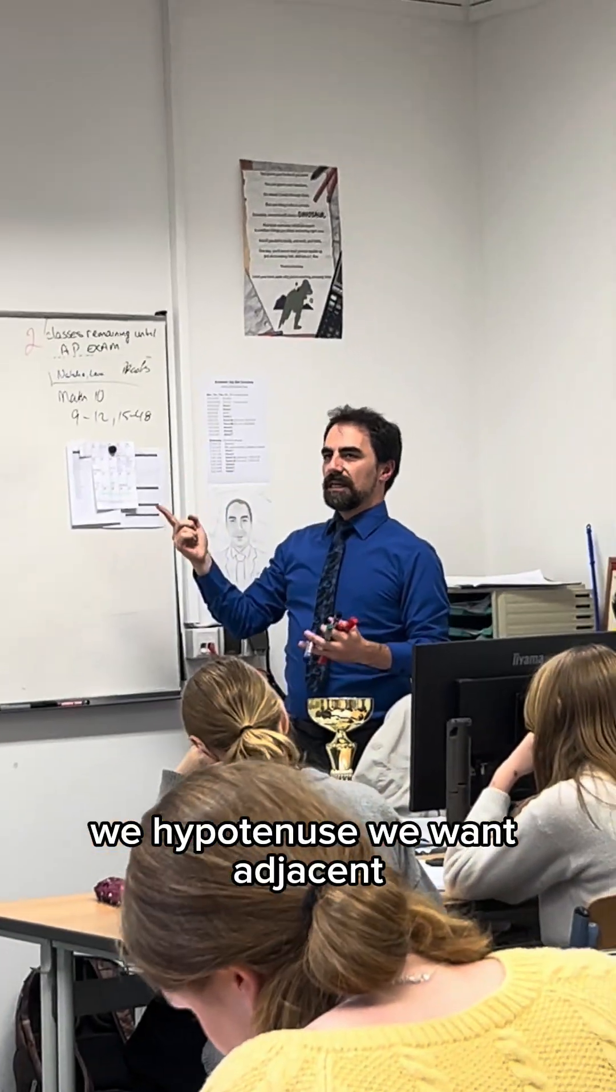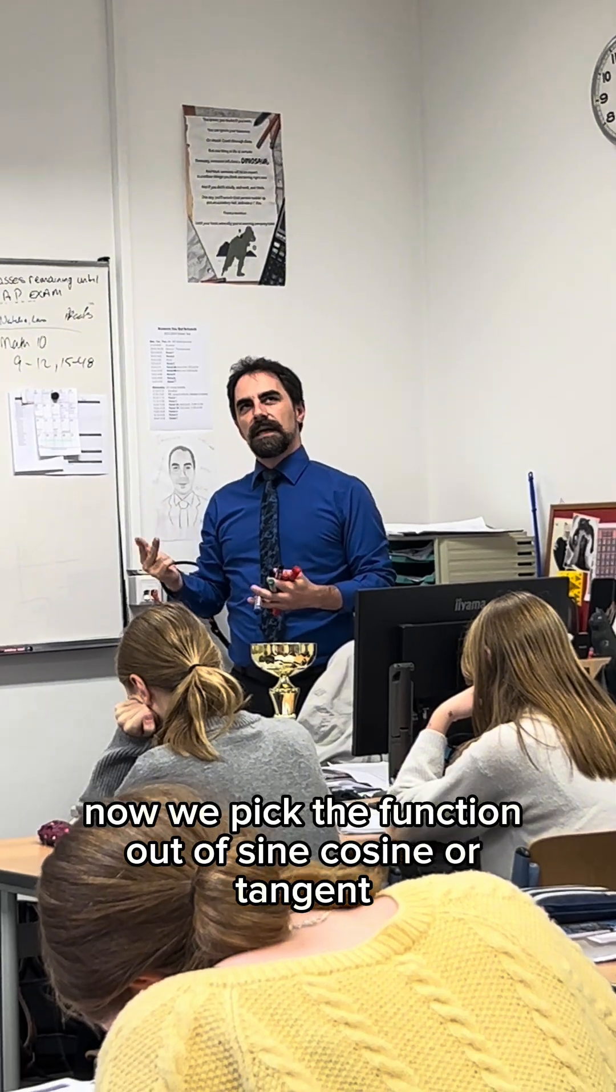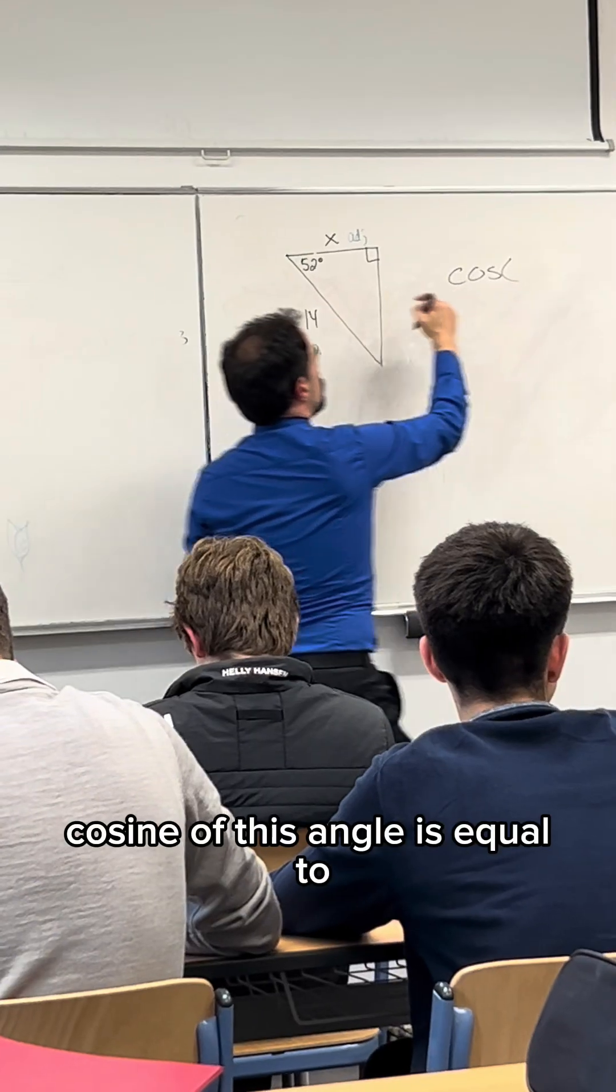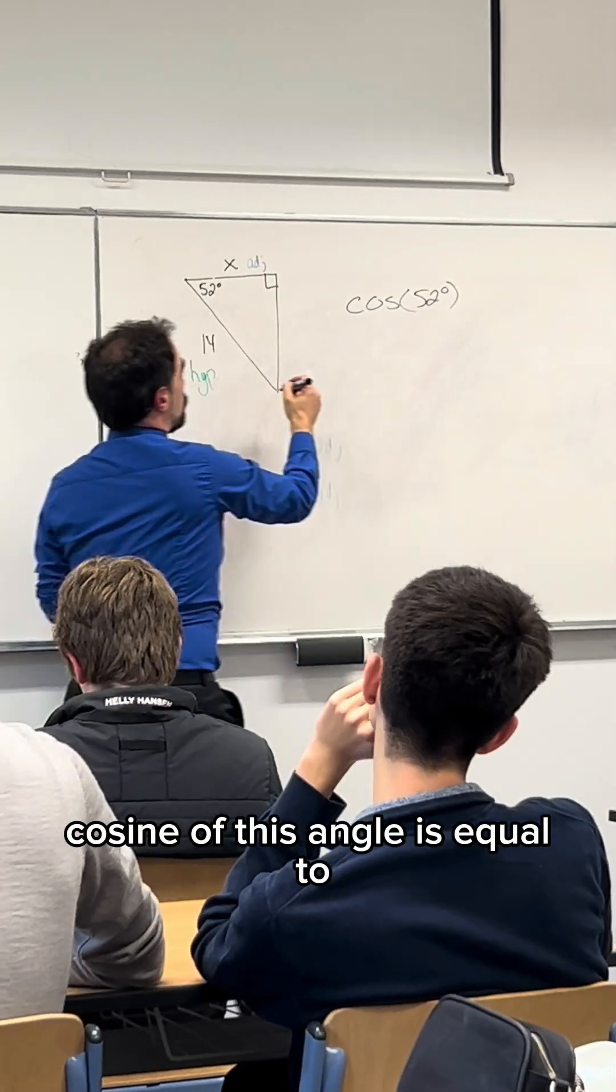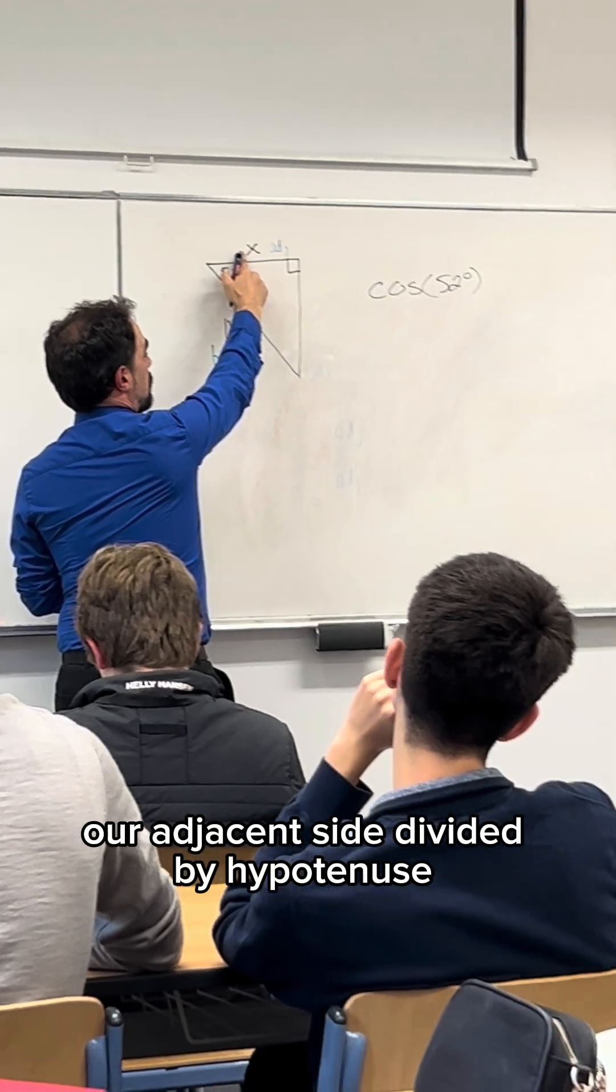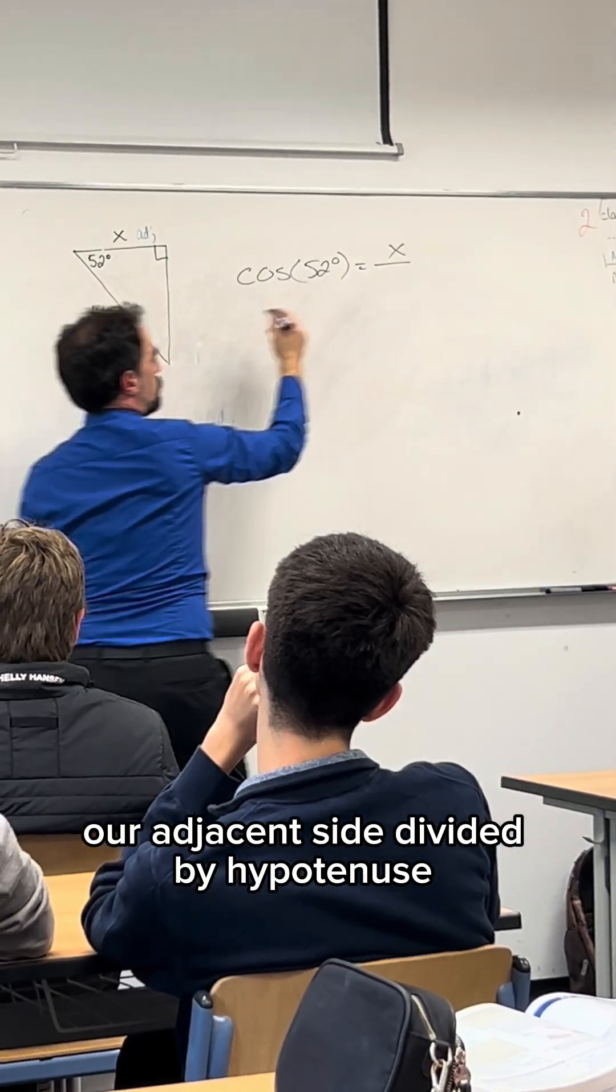We want adjacent. Now we pick the function out of sine, cosine, or tangent. Cosine. Cosine of this angle is equal to our adjacent side divided by our hypotenuse.